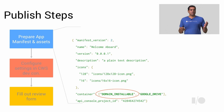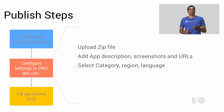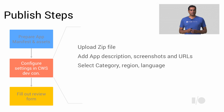Once you have built this app manifest and uploaded the corresponding app icons, you need to go to the Chrome Web Store Developer Console and upload this information. Also add other details like app descriptions, screenshots, URLs, and select the necessary category where you want the app to be listed, along with the region and language.